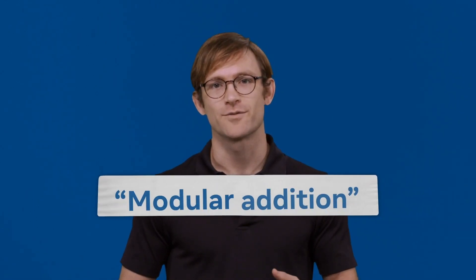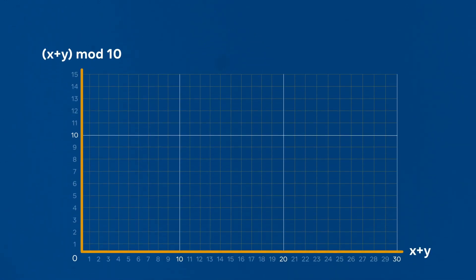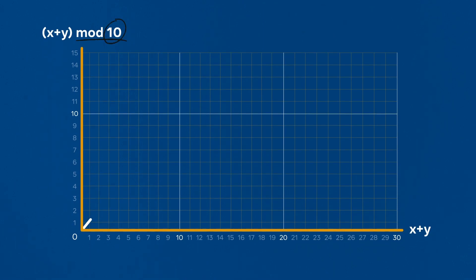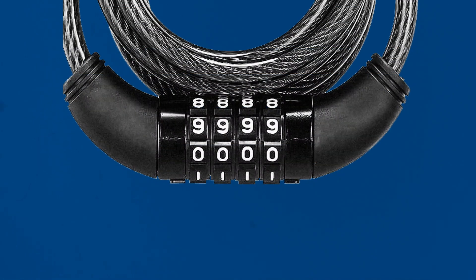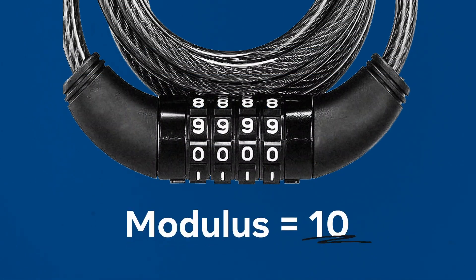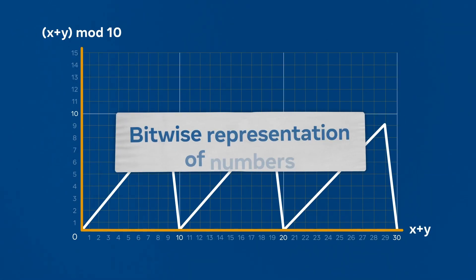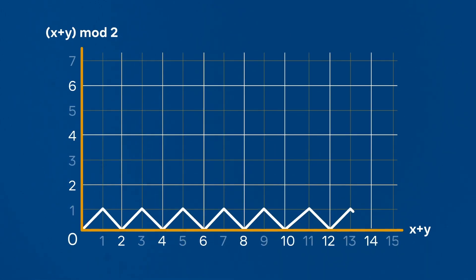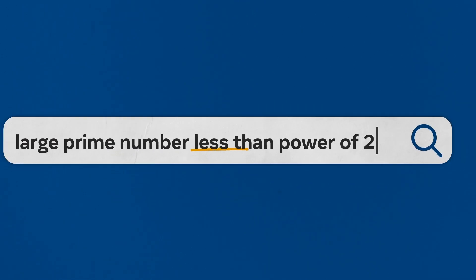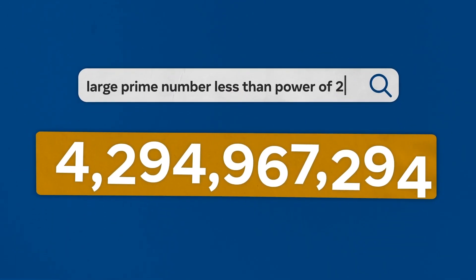And what about the bike locks? Well that was a metaphor for modular addition. Modular addition is just addition that wraps back around to zero each time you pass a multiple of the modulus. For our bike locks, the modulus was 10. In real world MPC, we use a variety of different values for the modulus. When we're dealing with bitwise representations of numbers, we often use a modulus of 2. But when we're dealing with big numbers, we usually pick a large prime number that's just a little bit less than a power of 2.